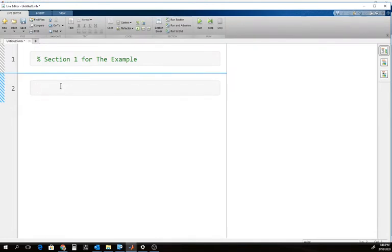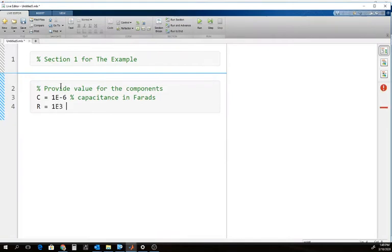I'm going to start by providing values for the components. Let's say the capacitor equals one microfarad. I'm over-commenting, and I think that's a good habit to get into—to comment your code as thoroughly as possible. Let's put a one kilohm resistor in here. That's going to be in the units of ohms.